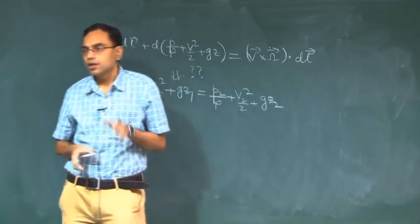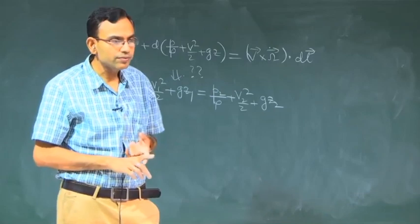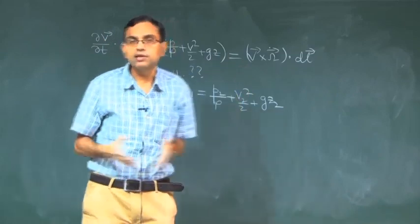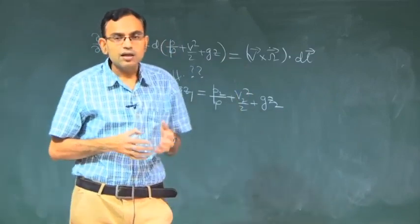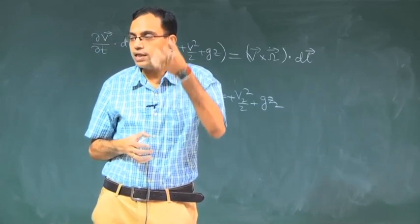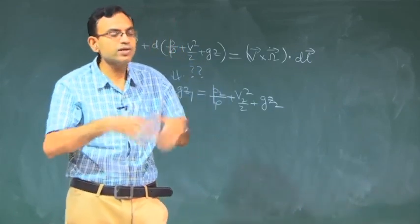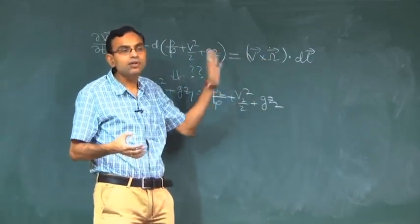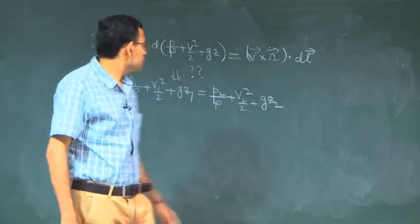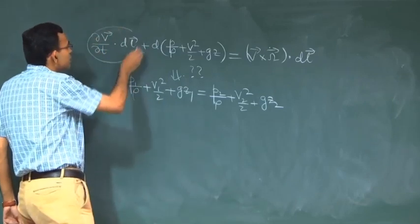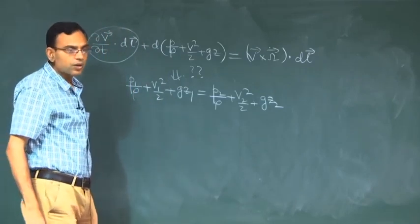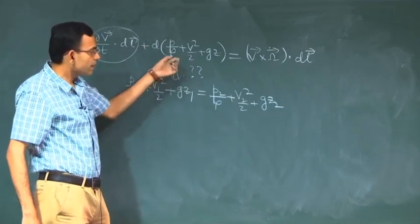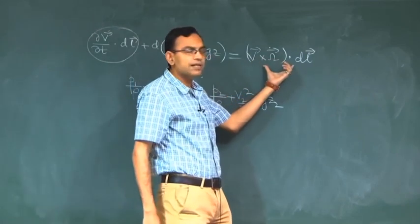First, we started with inviscid flow — that is the most important assumption, the most fundamental premise of all these equations. Second, gravity is the only body force acting along the negative z direction, which also has to be defined. Then, steady flow leads this term to equal zero, and rho equal to constant allows it to move in and out of the derivative without any problem.